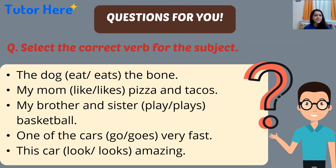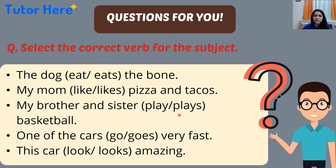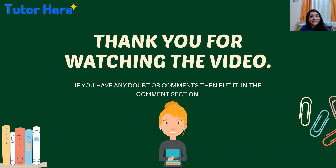We are almost at the end of the video, but as usual I have questions for you. Select the correct verb form for the subjects in these sentences: 'The dog eat/eats the bone,' 'My mom like/likes pizza and tacos,' 'My brother and sister play/plays basketball,' 'One of the cars go/goes very fast,' and 'This card look/looks amazing.' Thank you for watching the video — I'll see you guys next time!